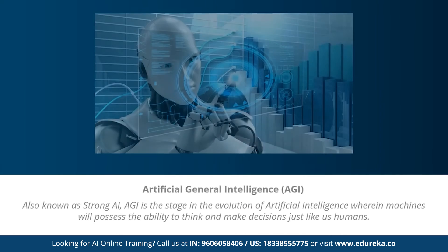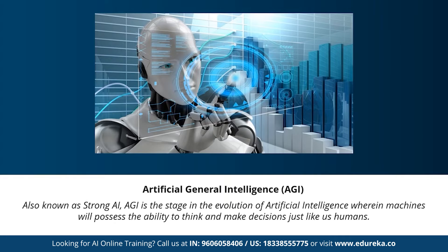Next we have artificial general intelligence, also known as strong AI. This stage is the evolution of artificial intelligence, wherein machines will possess the ability to think and make decisions just like human beings. There are currently no existing examples of strong AI, but it's believed we will soon be able to create machines as smart as humans. Strong AI is considered a threat to human existence by many scientists, including Stephen Hawking, who said its development could spell the end of the human race.